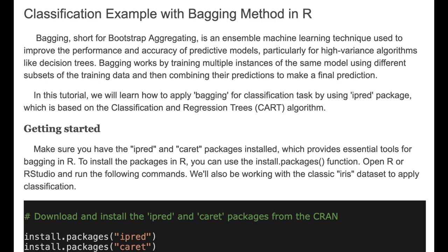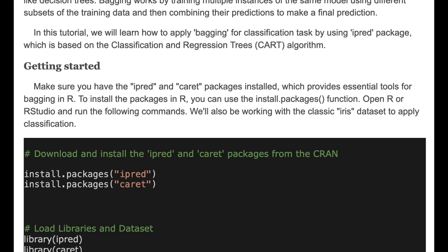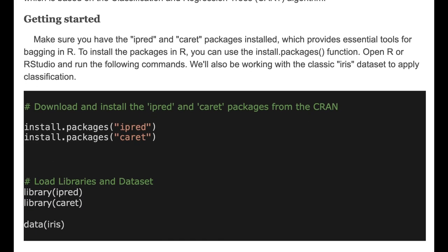Make sure you have the IPRED and caret packages installed on your environment, which provides essential tools for bagging in R. To install the packages in R, you can use the install.packages function as shown in the code below. We will also be working with the classic iris dataset. Here we download and install IPRED and the caret packages from CRAN and load both libraries and the dataset.